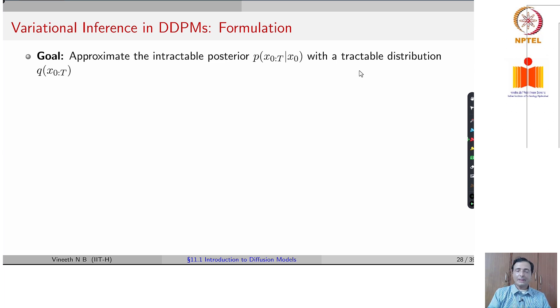This part of DDPMs you could say is similar to the derivation of VAEs. We ideally want this posterior p of xt or the joint distribution p of x0 to xt given x0. We approximate that with a tractable distribution q of x0 to t, which is also a joint distribution.